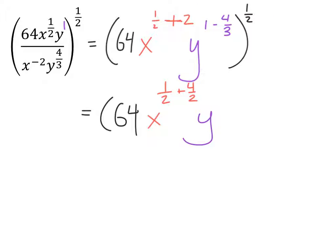I'll do the same thing with the y's. Here in 4 thirds, I have a denominator of 3. So I just need to figure out what divided by 3 is 1. Well, 3 divided by 3 is 1. So I have 3 thirds there, and that is subtracting the 4 thirds from here. So we'll go ahead and close this up and give it a power of 1 half.